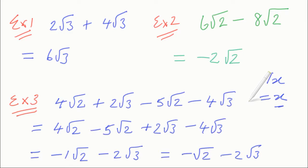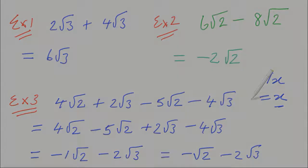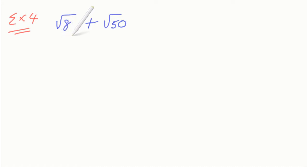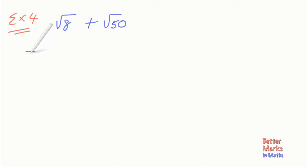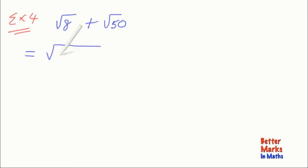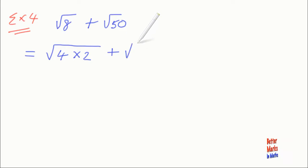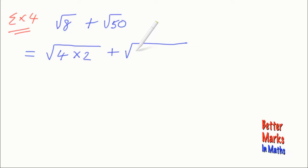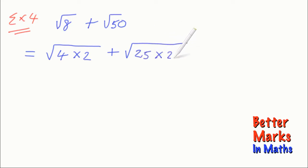The next set of examples involves surds that you have to simplify first before adding and subtracting. In this example, root 8 plus root 50 — they're definitely not like surds, so what you have to do is simplify them first and then see if you can add them together. Root 8: the biggest perfect square that goes into 8 is 4, so 4 times 2 equals 8. And the biggest perfect square that goes into 50 is 25, so 50 equals 25 times 2.